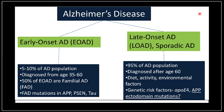Alzheimer's disease occurs in two forms: early onset and late onset. Early onset AD contributes around 5–10% of total AD cases, diagnosed between ages 35 and 60, with 50% being familial due to mutations in amyloid precursor protein, presenilin, and tau genes. Late onset AD, also known as sporadic AD, accounts for approximately 95% of total AD cases, diagnosed after age 60, with causative factors including diet, activity, environmental factors, and genetic risk factors such as mutations in ApoE-ε4 and amyloid precursor protein ectodomain.